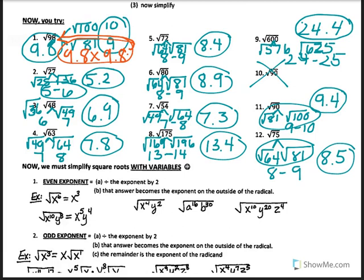Check numbers 1 through 12. Number 2: 5.2 times 5.2 gives 27.04 — that went over, so we lower it. Try 5.1 times 5.1, which gives 26.01 — that's okay because it's lower. Number 3: 6.9 times 6.9 gives 47.61 — we're good with that.